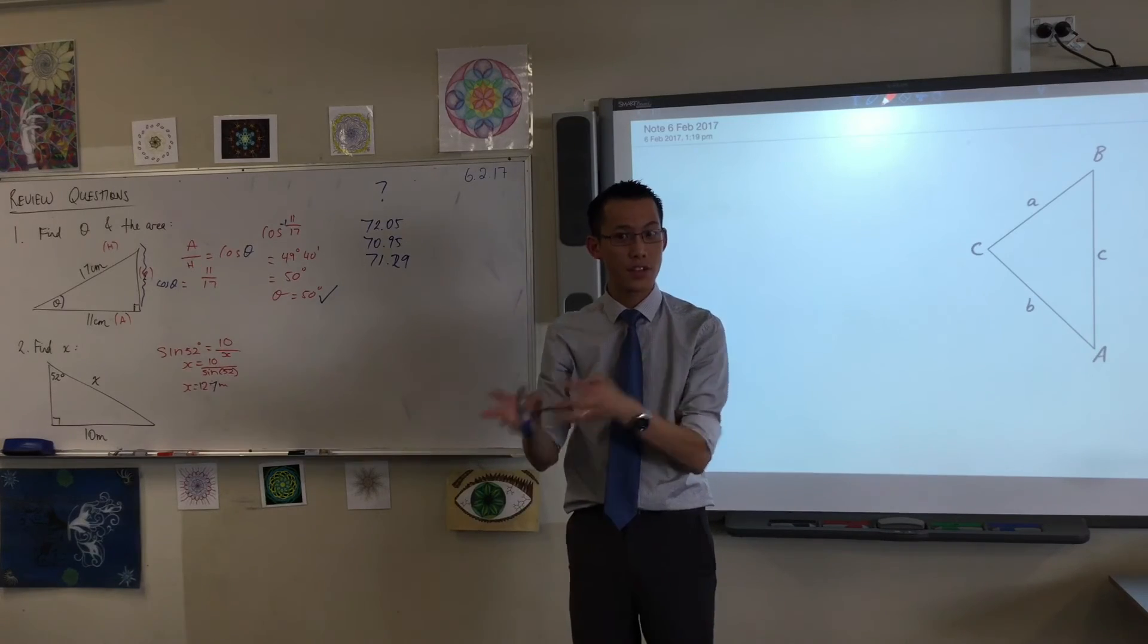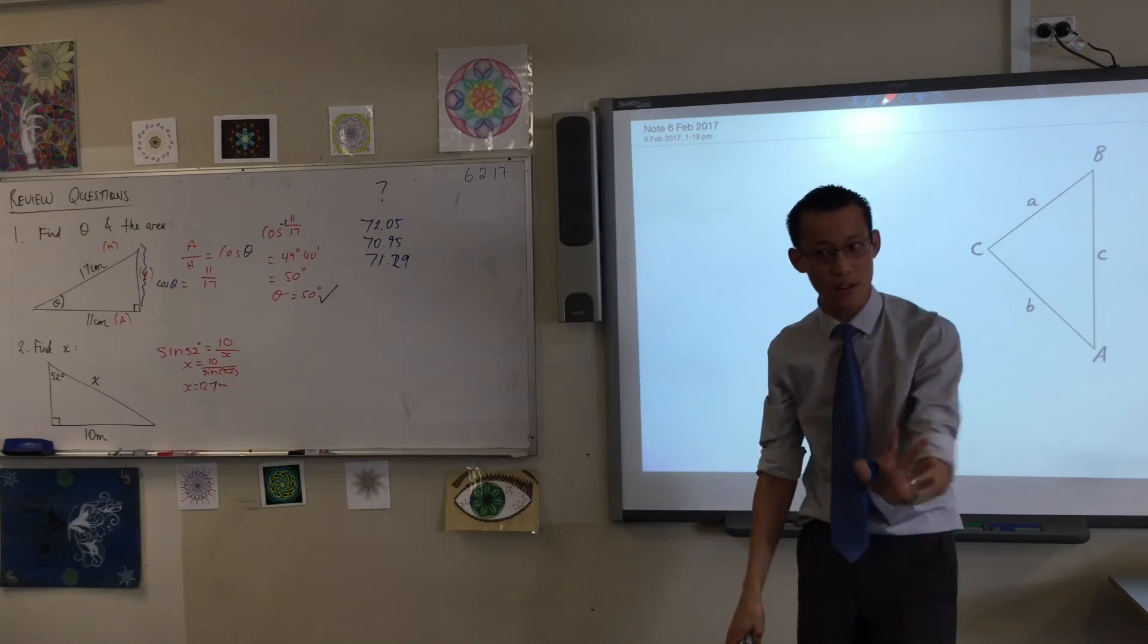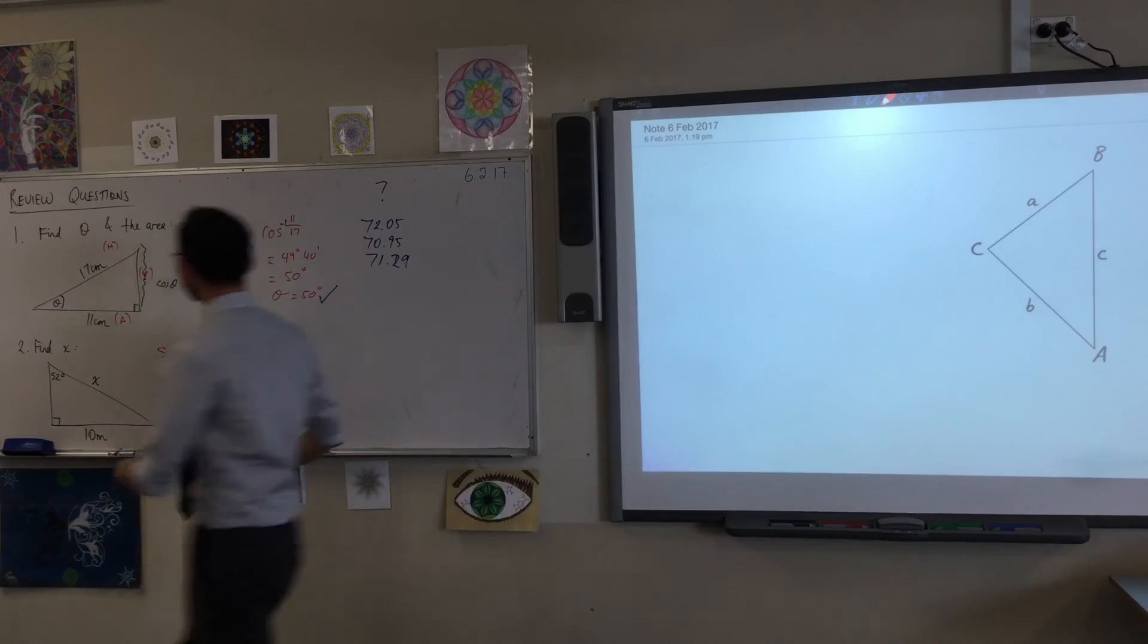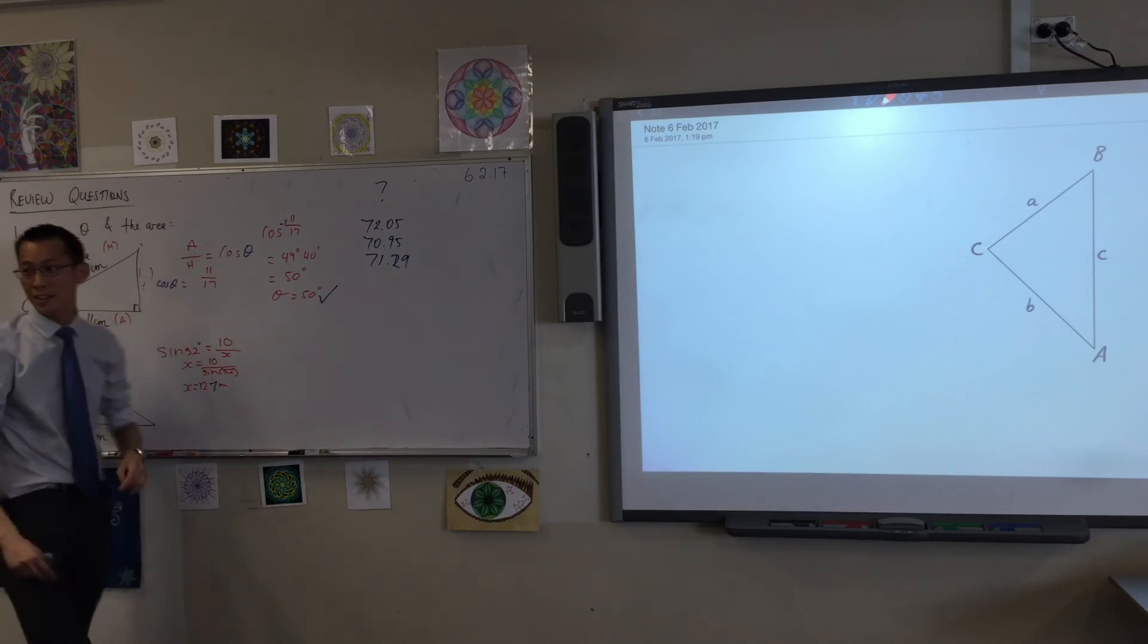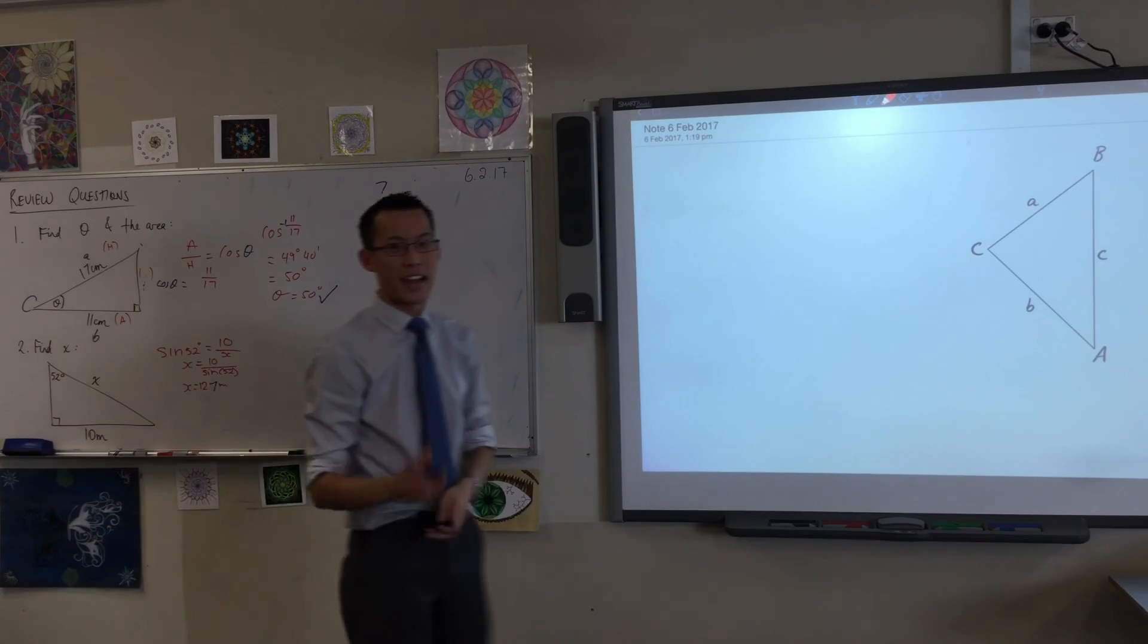Alternatively, last lesson we looked at area of a triangle even when it's not a right angle triangle. In fact, even without this side here, so long as you've got the angle that Gary's already provided for us, there's another way to work out the area. What is it? Half times ab sine C. Here's an a and a b - two lengths that surround this angle. So if you call this C, then half ab sine 50 degrees would be perfect.